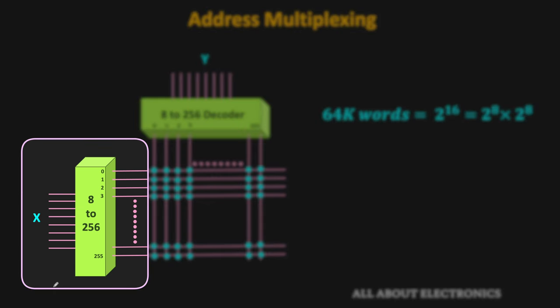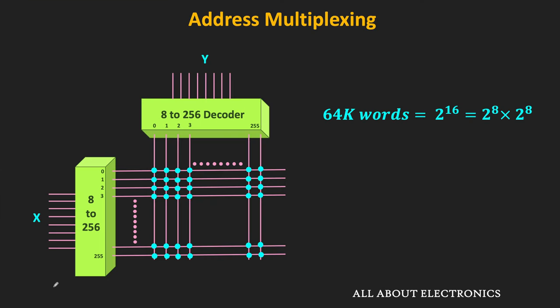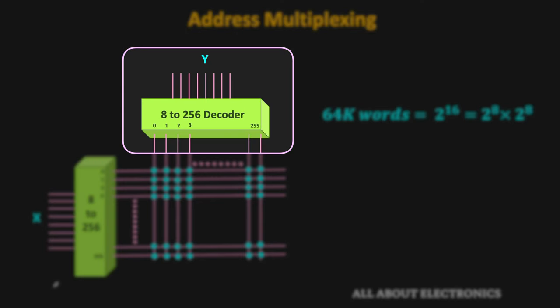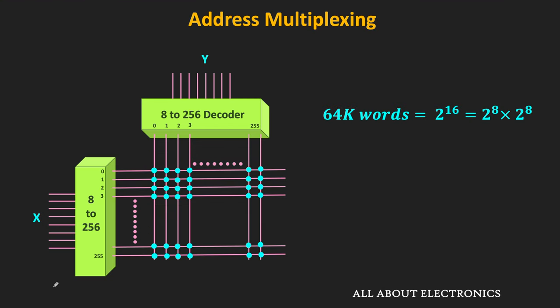If we do not have 16 address pins available, we can reduce the number of pins using address multiplexing. In address multiplexing, the address is applied in two different steps — first the row address is applied using 8 pins, and then using the same 8 pins the column address is applied after some time. Instead of 16 pins, we require only 8 pins for addressing.